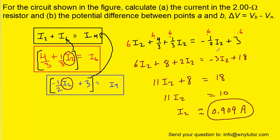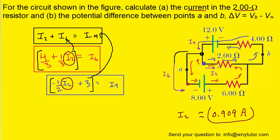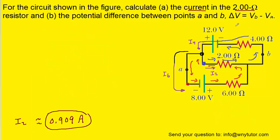This solves Part A. We were asked for the current through the 2-ohm resistor, and I2 is indeed that current. So the answer to Part A is approximately 0.909 amps.